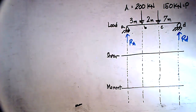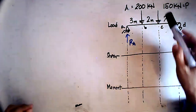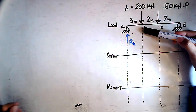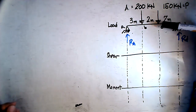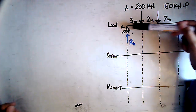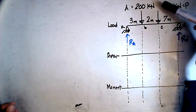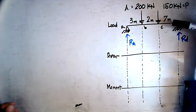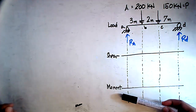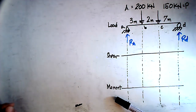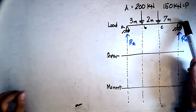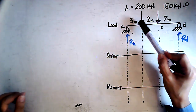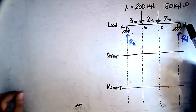We are now going to discuss one problem regarding beams. The beam here is loaded with 200 kilonewtons at point B, which is at a distance of 3 meters from point A, and another 150 kilonewtons loaded at point C, at a distance of 5 meters from point A. These loads are concentrated loads. We need to determine the shear and moments by drawing the shear diagram and the moment diagram based on the load diagram. This is a simply supported beam.